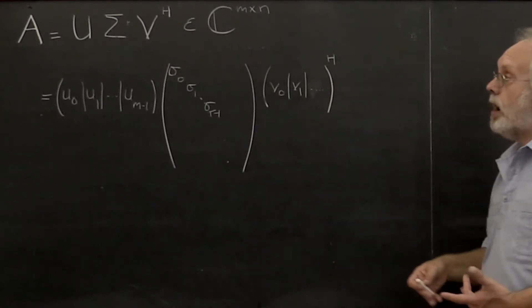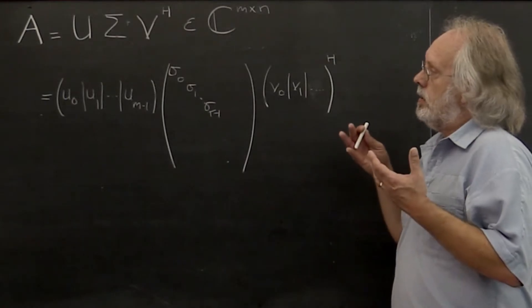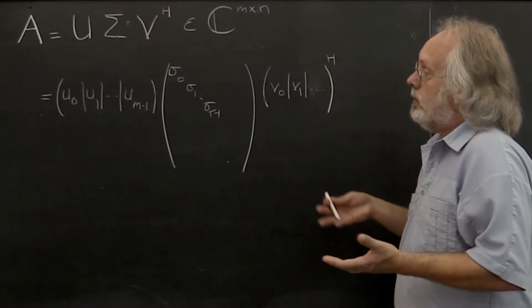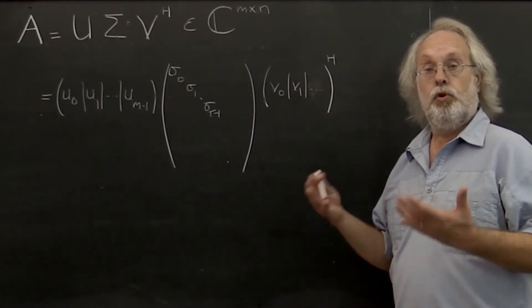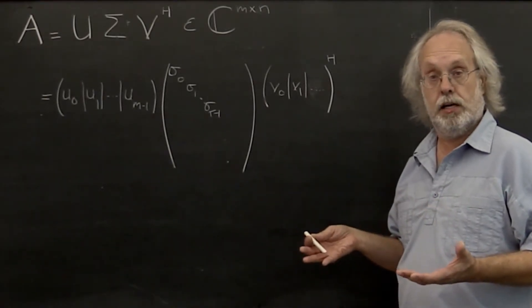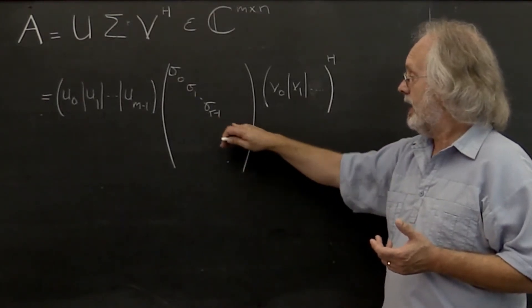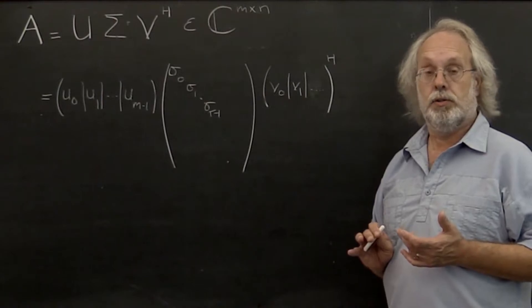Now, the problem in practice is that you may collect A, you may compute A, but in computing or measuring A, there may be some error or noise in that matrix. In that case, it's unlikely that any of the diagonal elements are equal to zero.